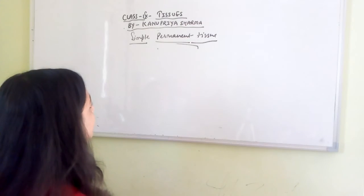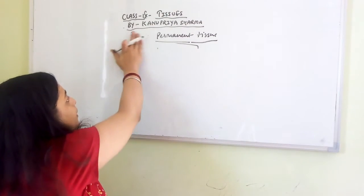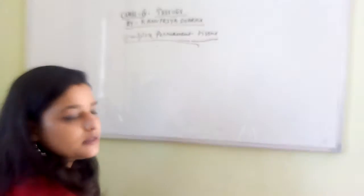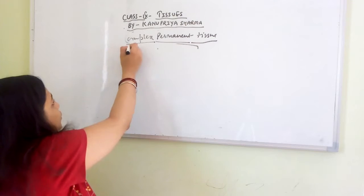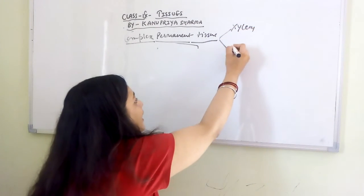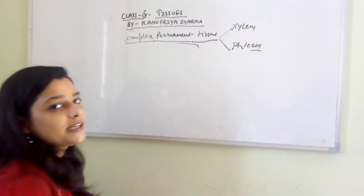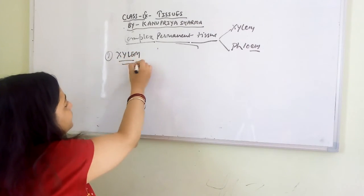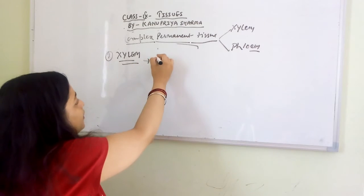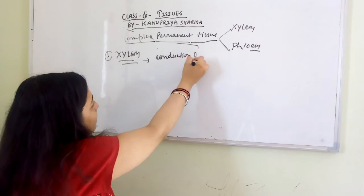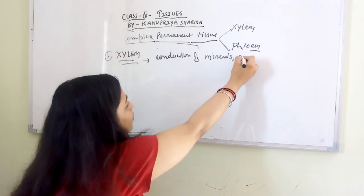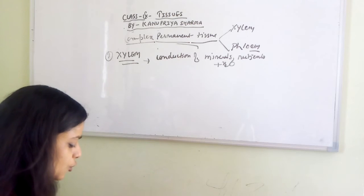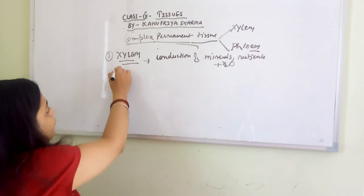Now let's talk about complex permanent tissue. Complex permanent tissue is a combination of different kinds of simple permanent tissue and more. It is of two types: xylem and phloem. Xylem is mainly involved in the conduction of minerals, nutrients, and water, and it forms a complex tube by the fusion of elongated cells. It is made up of four elements.